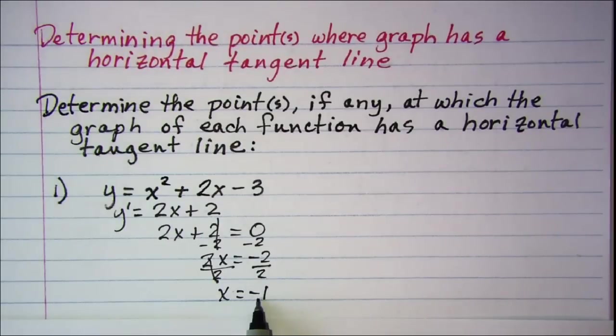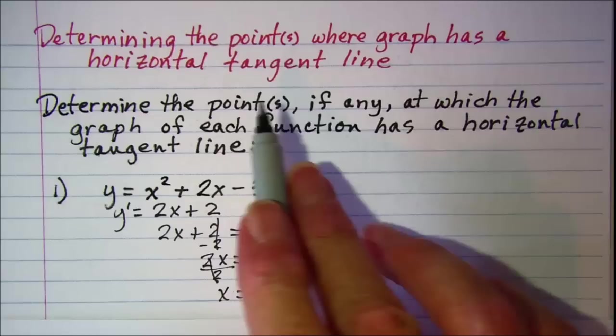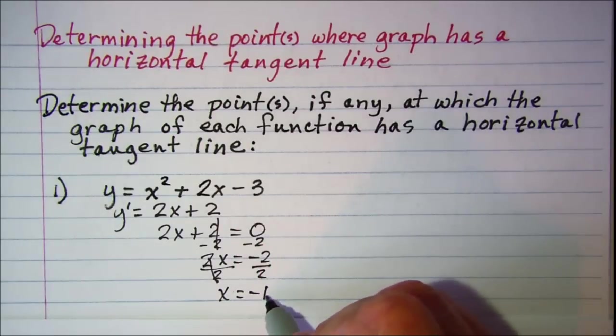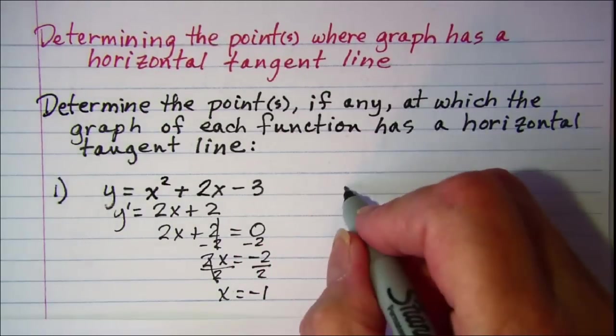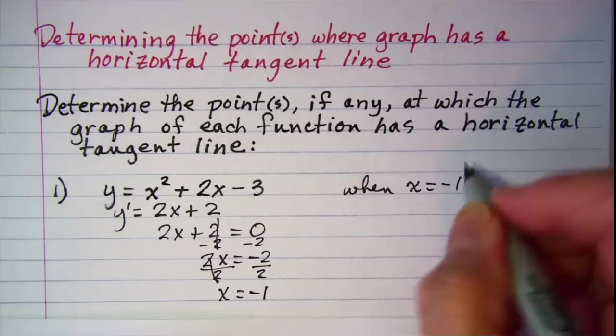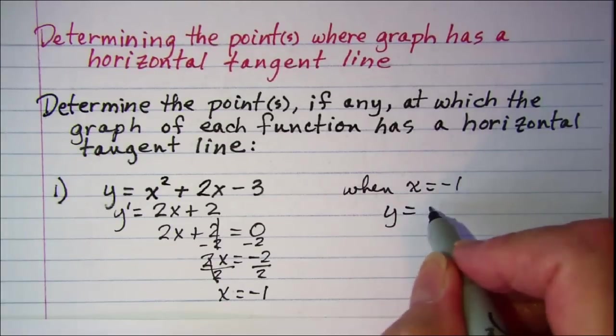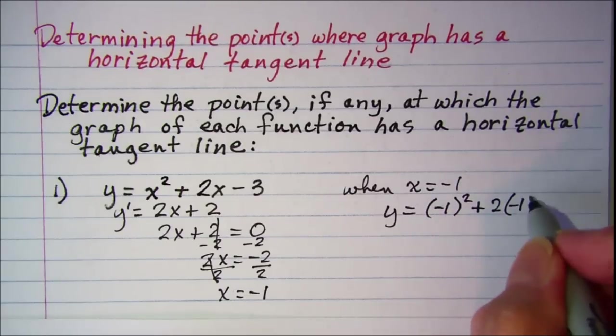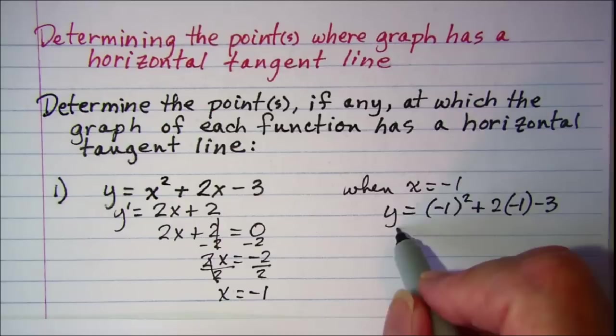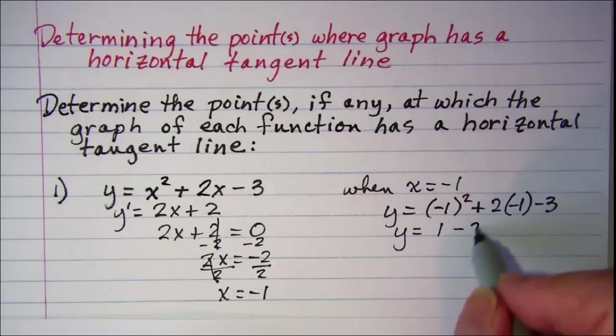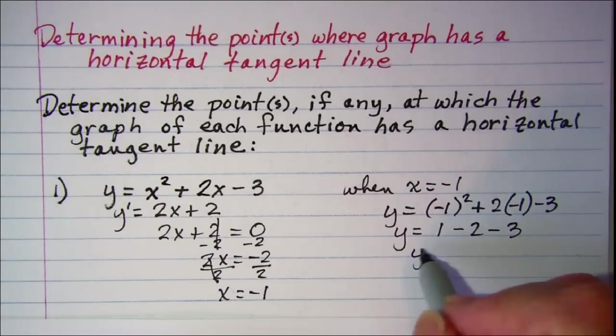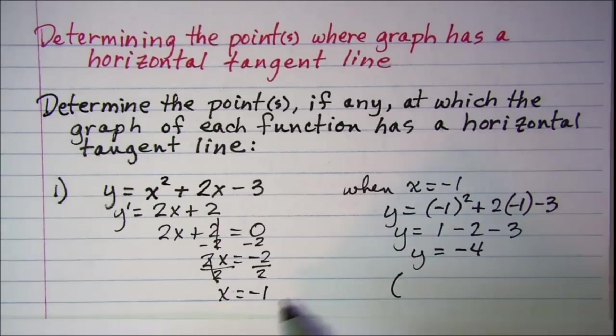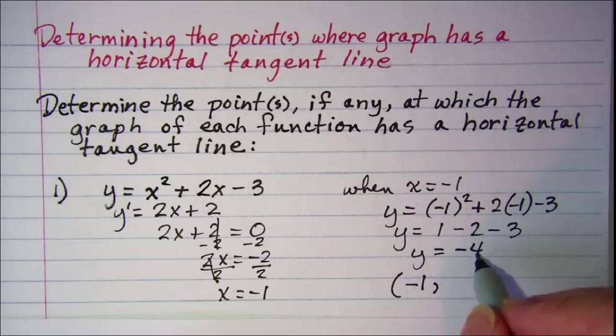So when x is equal to negative 1, our tangent line has a slope of 0. Now we need a point which means we need to find the y that goes along with this x. When x equals negative 1, y is equal to negative 1 squared plus 2 times negative 1 minus 3. So y is equal to negative 1 minus 2 minus 3, y is equal to negative 4. So our point is negative 1 negative 4.